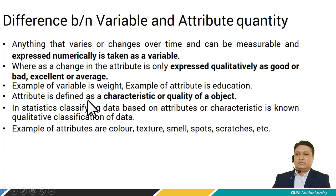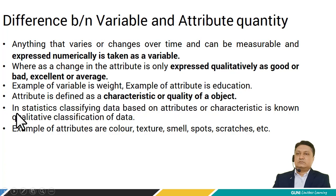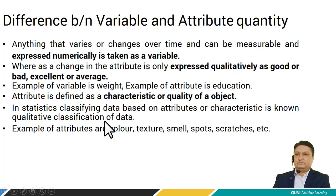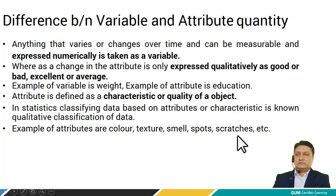Attribute is defined as a characteristic or quality of an object. Statistics classifying data based on attribute or characteristic is known as qualitative classification of data. Examples of attributes are color, texture, smell, sports, scratches, etc.